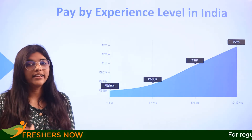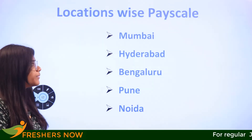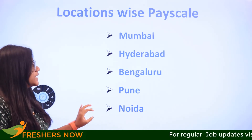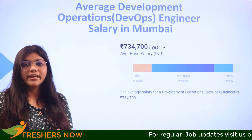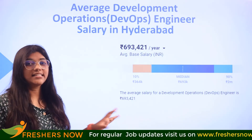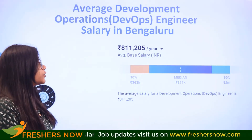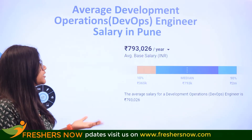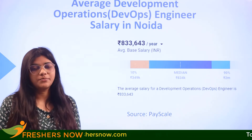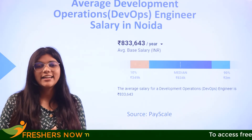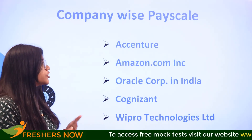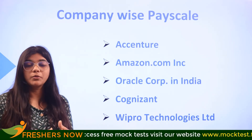Looking at major cities in India paying their DevOps engineers — the major cities covered are Mumbai, Hyderabad, Bengaluru, Pune, and Noida. The salary of a DevOps engineer in Mumbai is ₹7,34,000 per annum, and in Noida it is ₹8,33,000 per annum.